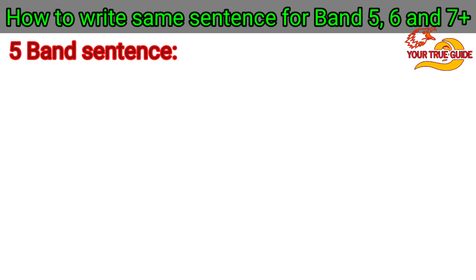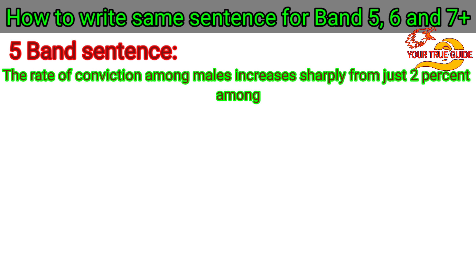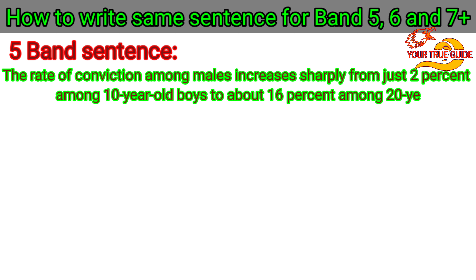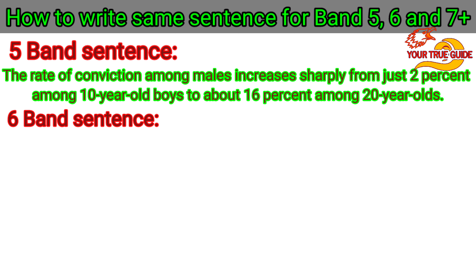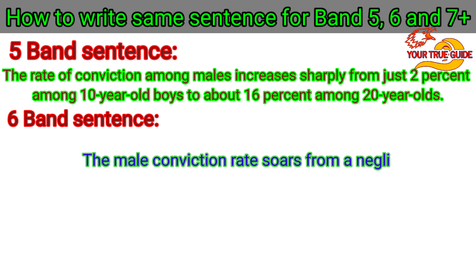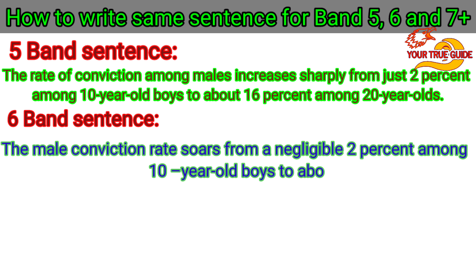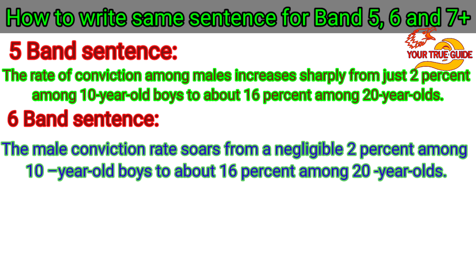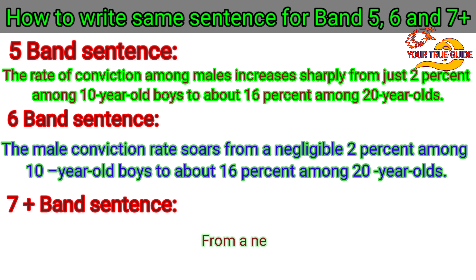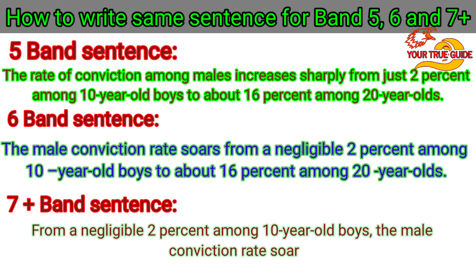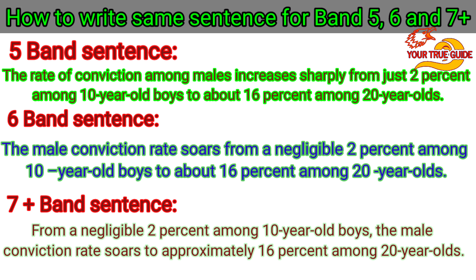One more sentence with 5 bands: 'The rate of conviction among males increases sharply from just 2% among 10-year-old boys to about 16% among 20-year-olds.' Same sentence for band 6: 'The male conviction rate soared from a negligible 2% among 10-year-old boys to about 16% among 20-year-olds.' For band 7 plus: 'From a negligible 2% among 10-year-old boys, the male conviction rate soared to approximately 16% among 20-year-olds.' Here you can easily understand the difference between different bands.